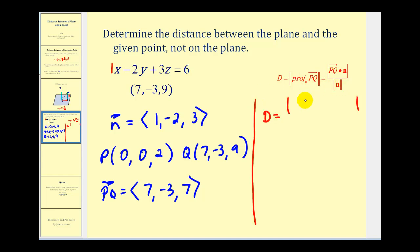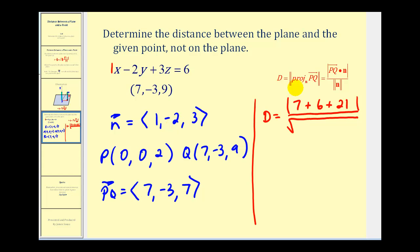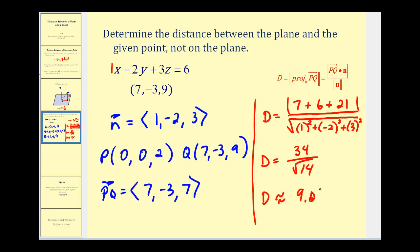Let's go ahead and figure out what that would be. We're going to find the absolute value of vector PQ dotted with vector N. We'll have one times seven — that's seven — plus negative two times negative three — that's six — plus three times seven — that's 21, divided by the magnitude of vector N, which is the square root of one squared plus negative two squared plus three squared. So the numerator will be positive thirty-four. The denominator is going to be the square root of one plus four plus nine, that's the square root of fourteen. So the distance between the point (7, -3, 9) and the given plane will be 34 over the square root of 14, which is approximately 9.09 units.